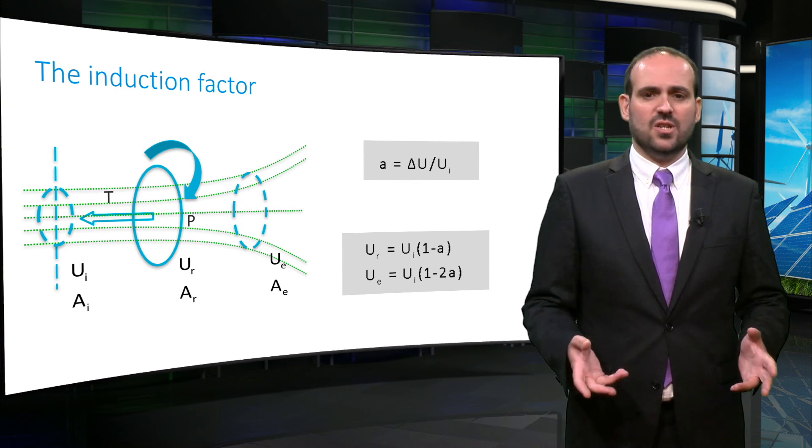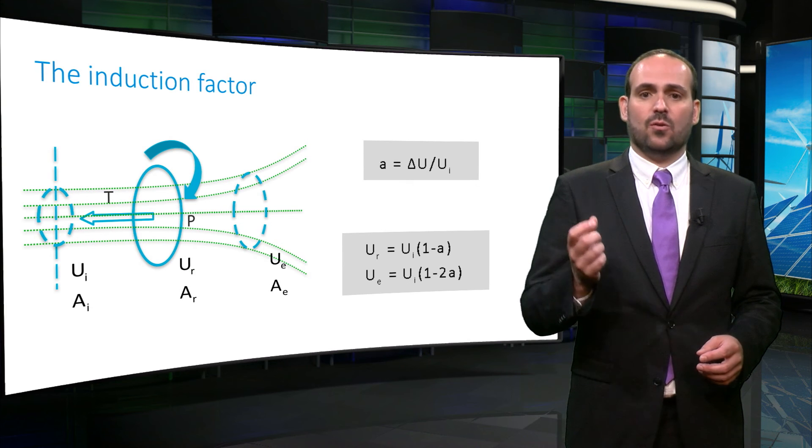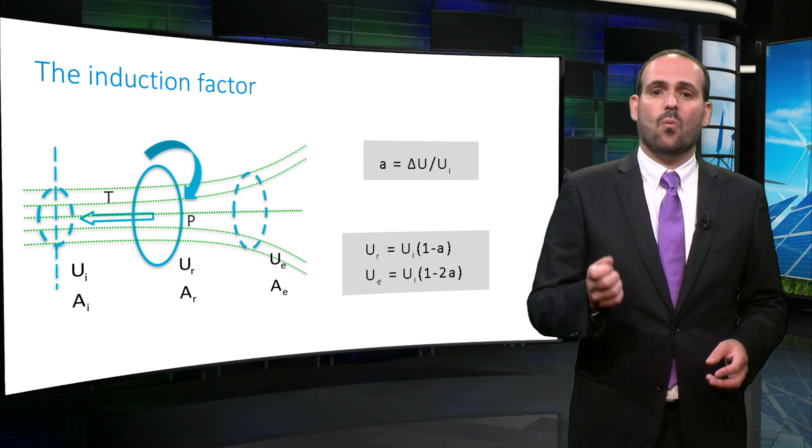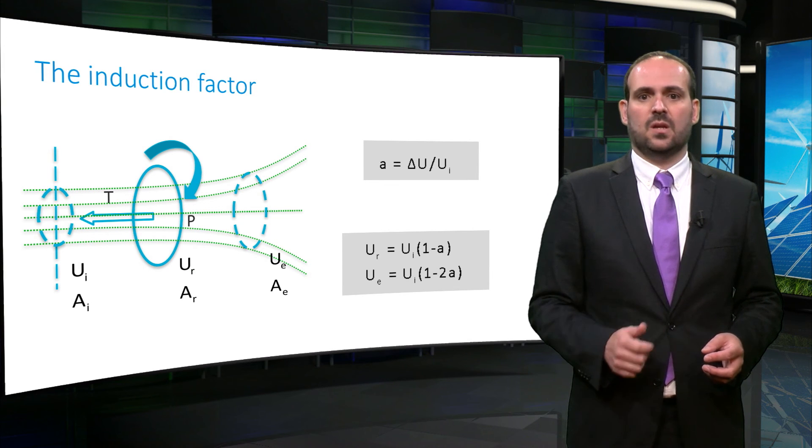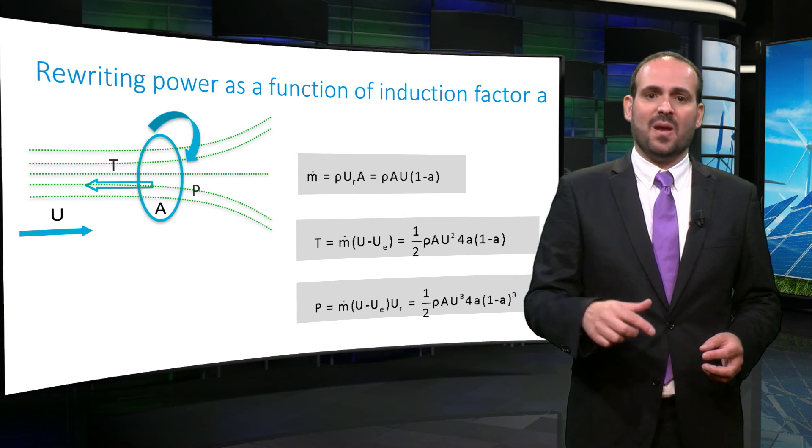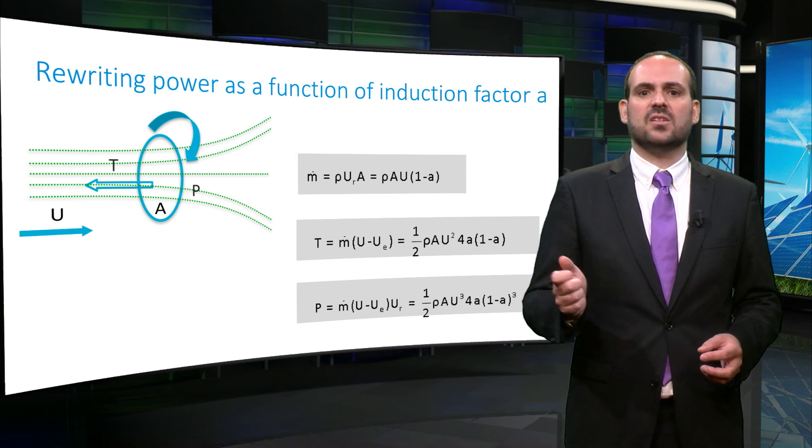As the flow loses kinetic energy, we can define that the turbine decelerates the flow by an induction factor a, and the wake system decelerates the flow also. We can define conservation of mass, momentum, and power as a function of this induction factor a.